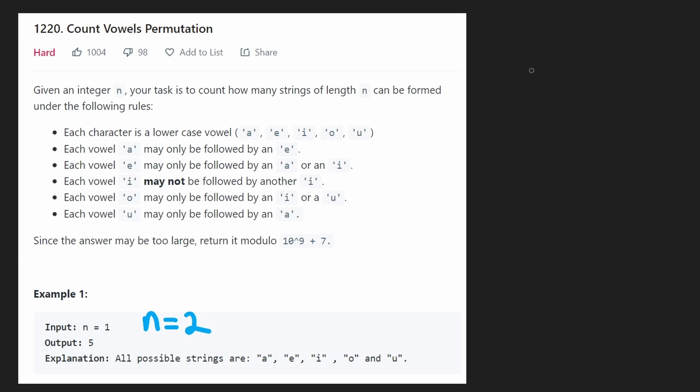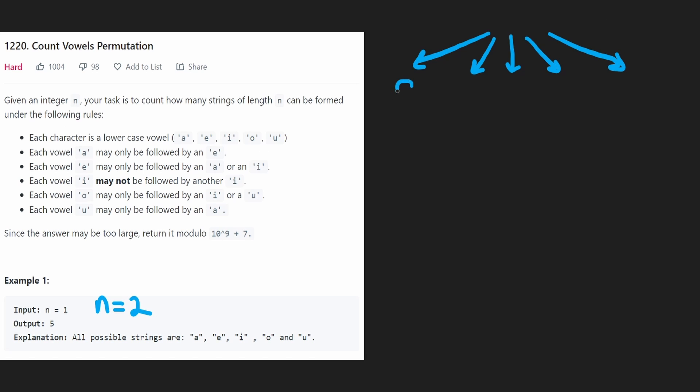What would that look like? Well initially we have five choices. The string can start with an a, e, i, o, u. Now we have five strings. One of them ends with an a, one ends with an e, another ends with an i, o, u.